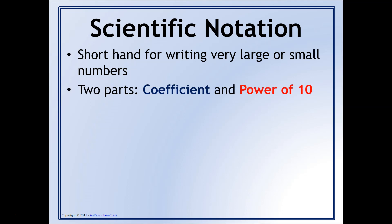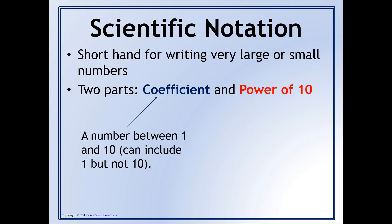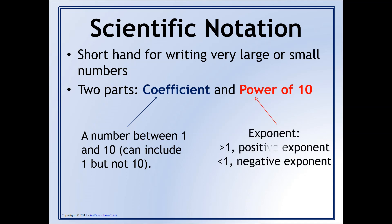Scientific notation always includes two parts: the coefficient and the power of ten. Your coefficient is always going to be a number between one and ten — it can include one, but not ten. The power of ten is always going to be an exponent of some kind. If your number is going to be greater than one, then that's when you have a positive exponent. If your number is less than one, that's when you're going to have a negative exponent.